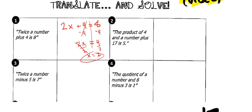Let's pick number four. I see this word quotient. The quotient of a number and six minus three is one. So the quotient of a number divided by six minus three is one.